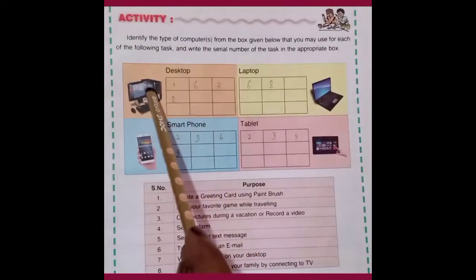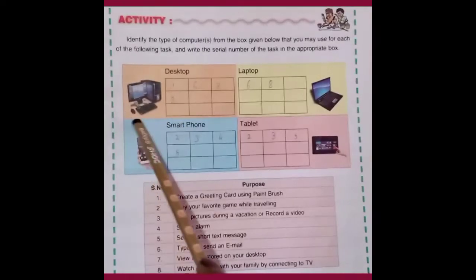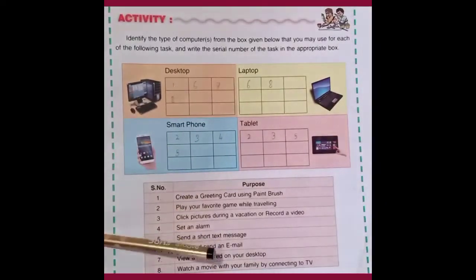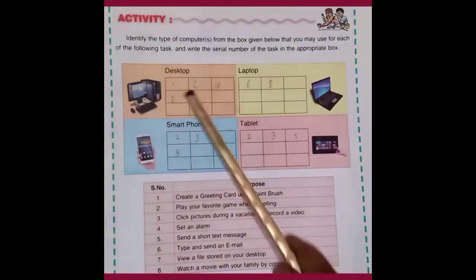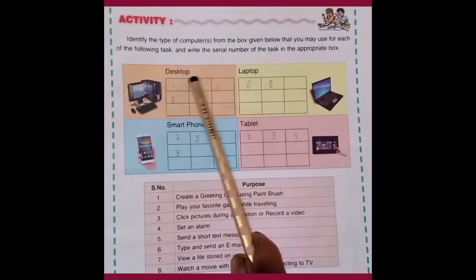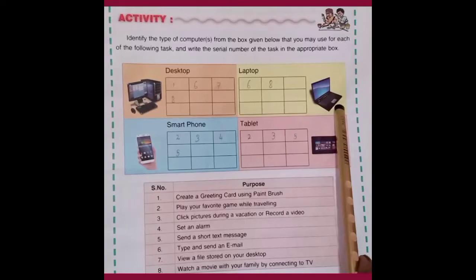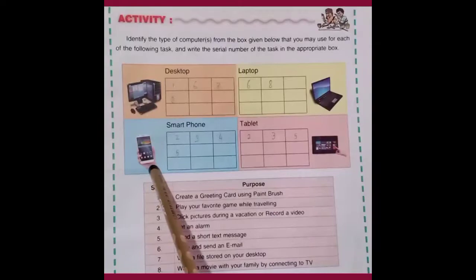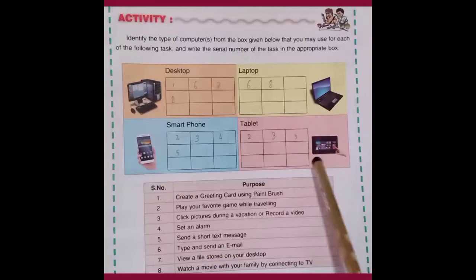Look at this picture. This is a desktop — this is also a computer. This is another type of desktop. Here it is a monitor, here it is a CPU with its keyboard and mouse. This is a desktop. It is a laptop — look at this picture, it is a laptop. And this is a smartphone. And this is a tablet.